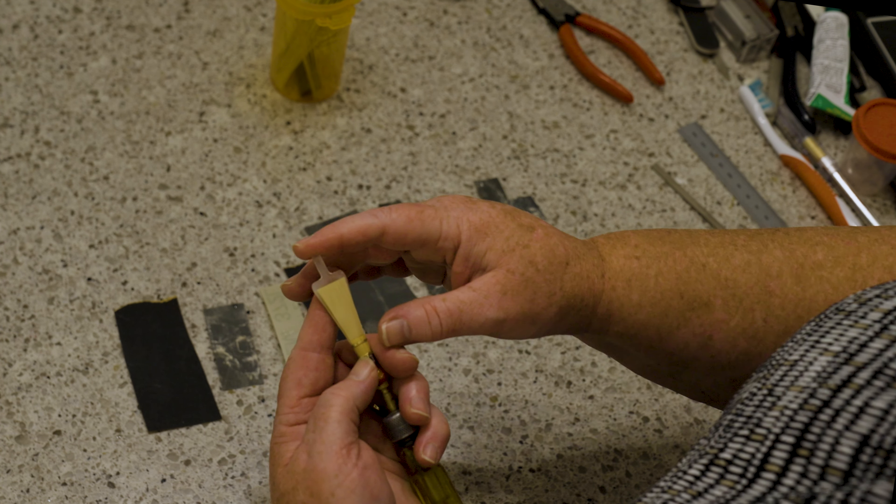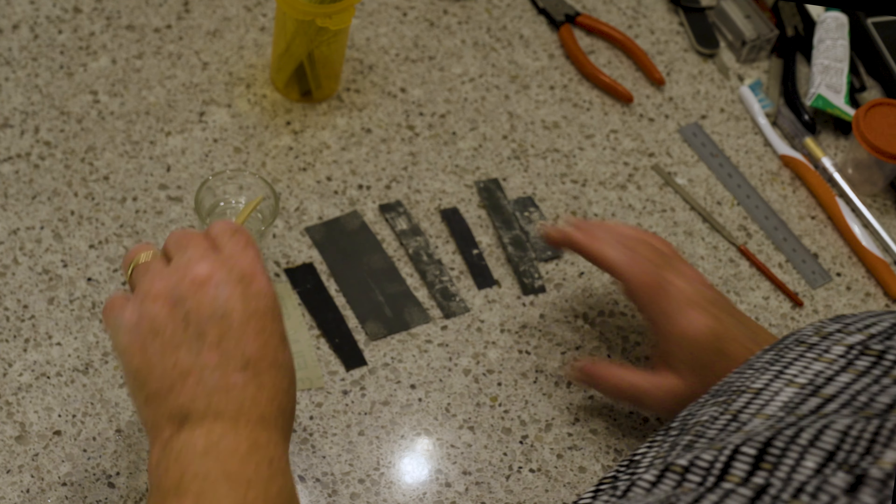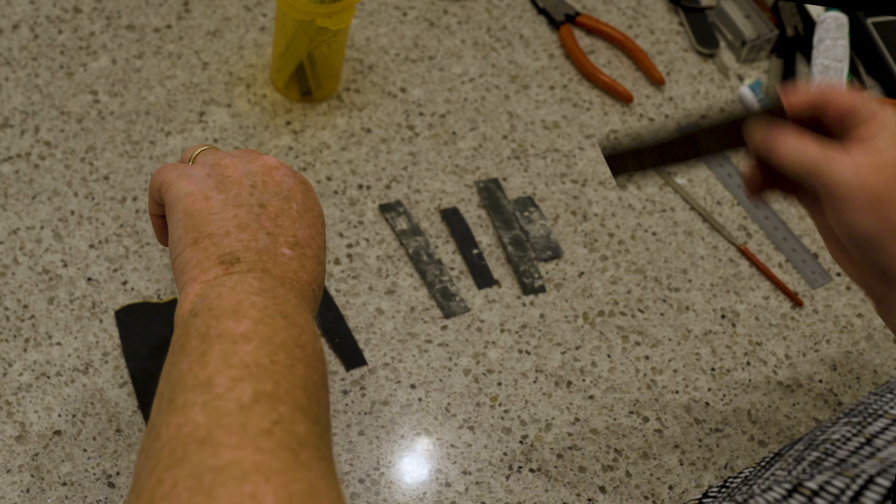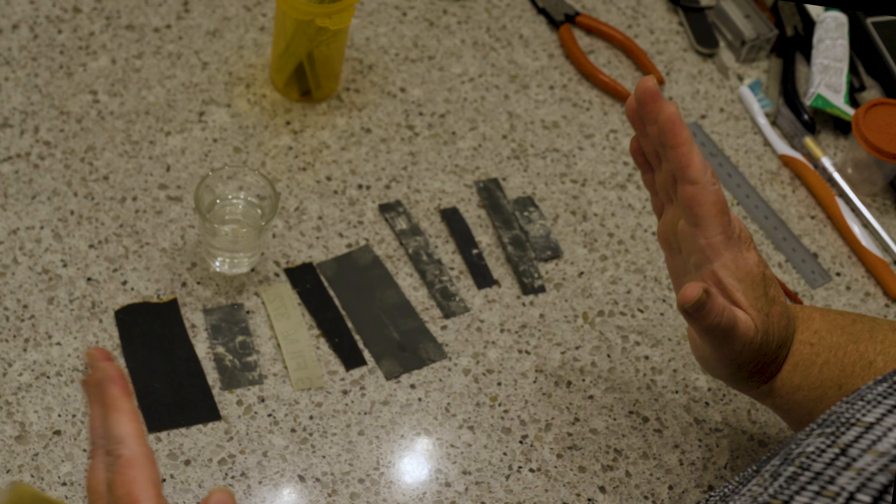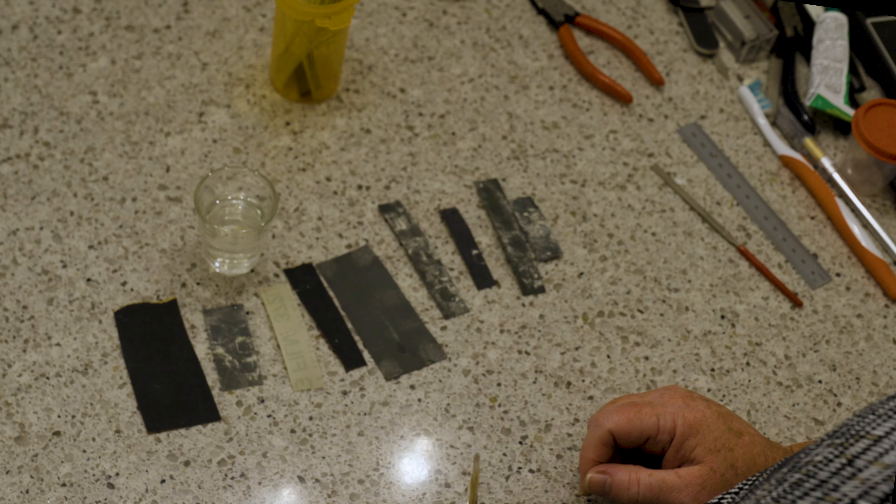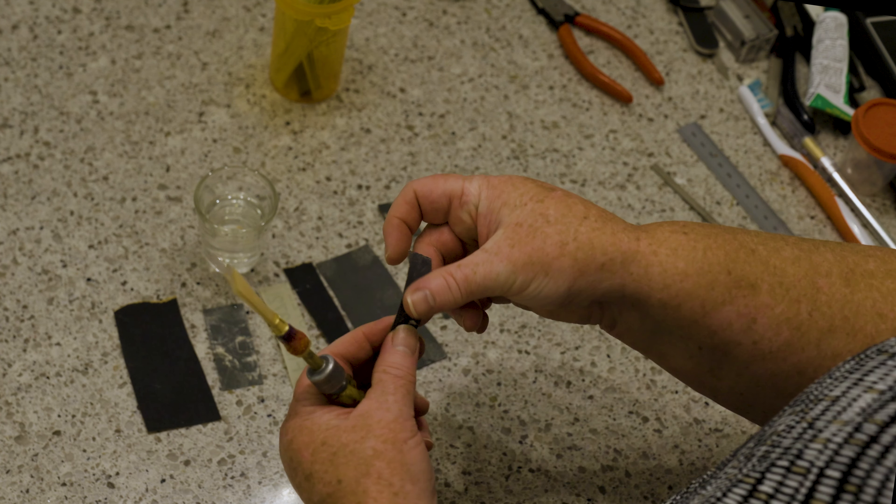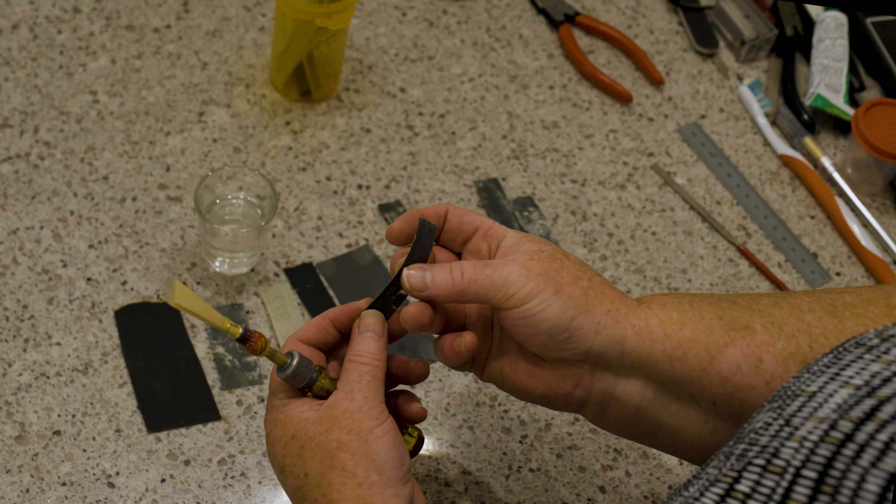So I like to definitely work with sandpaper. This is wet dry sandpaper. It comes in big eight and a half by eleven sheets and I've just cut it down to a manageable size. What I like to do is just cut it into little strips so that I can wrap it around my finger.